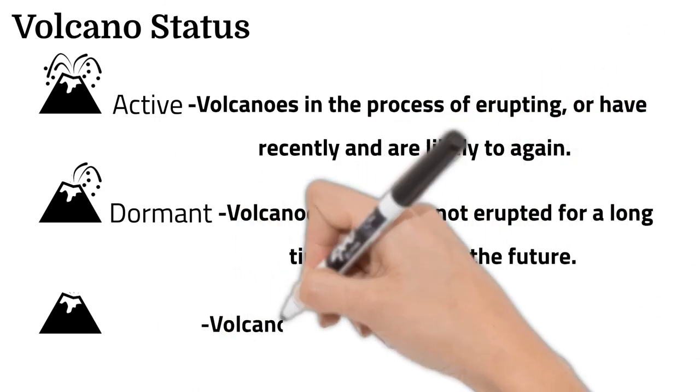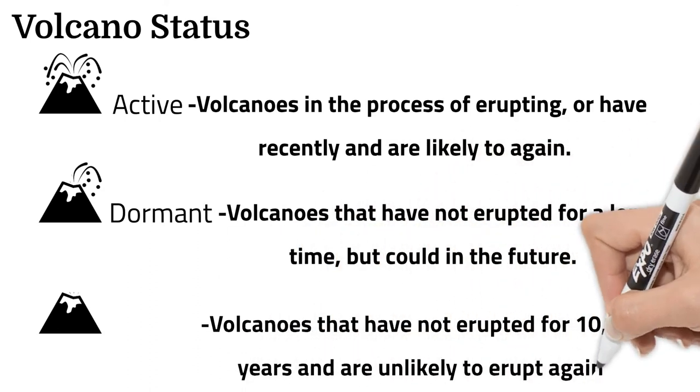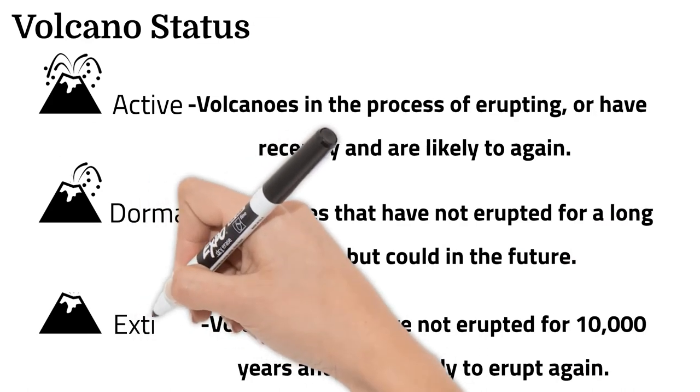If a volcano is probably not going to erupt and hasn't for 10,000 years or so, it is called an extinct volcano.